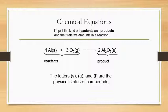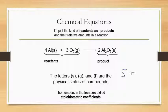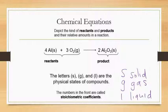The letters S, G, and L are the physical states of a compound: S is for solid, G is for gas, and L is for liquid. There is also AQ, which stands for aqueous — meaning dissolved in water, for example sodium chloride dissolved in water. The numbers at the front — such as 4, 3, and 2 — are known as stoichiometric coefficients.